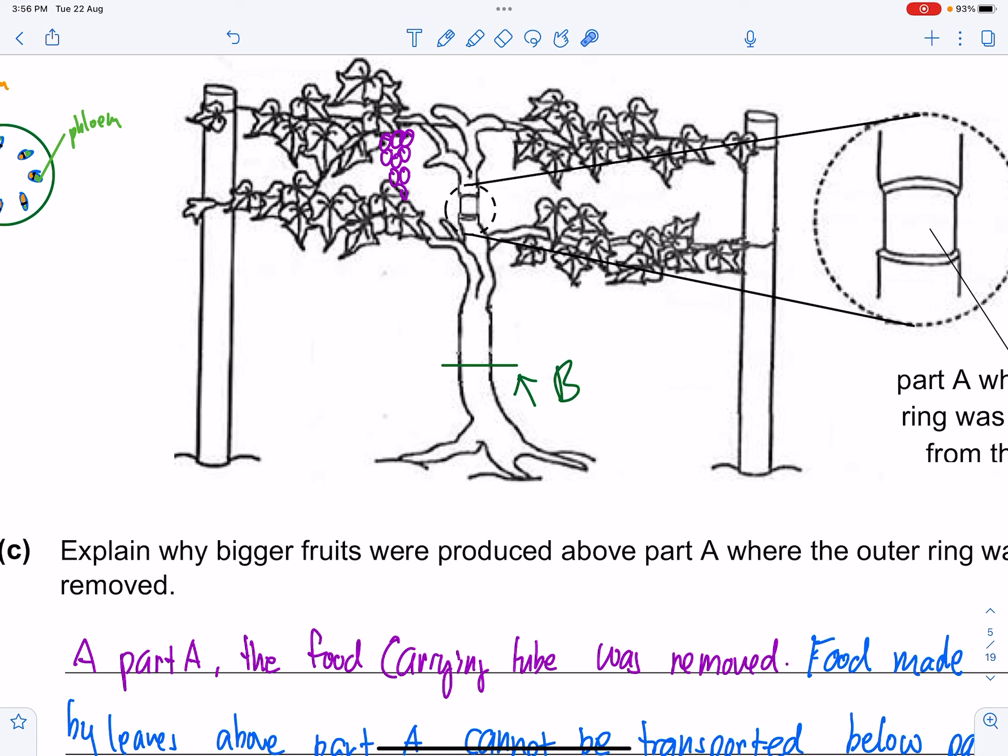Why? When the food carrying tube is removed at point B, all the leaves are above point B. So every single leaf over here will not be able, what the food that is made here will not be able to be transported below towards the roots.